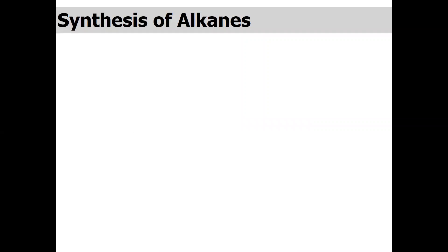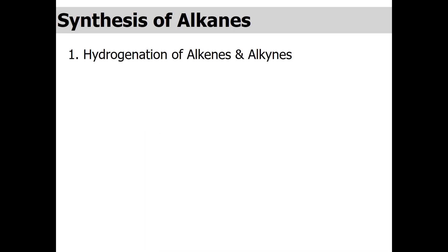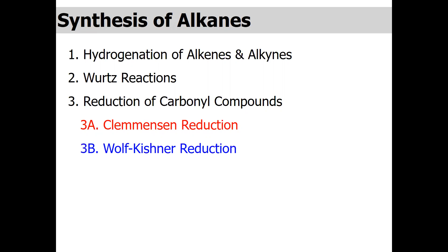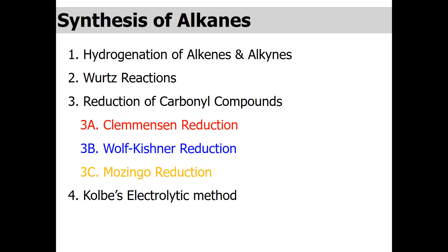The highlights of today's lecture: we will discuss hydrogenation of alkenes and alkynes, and the Wurtz reaction by which we can synthesize alkane. For reduction of carbonyl compounds, we will discuss three different ways: the first is Clemmensen reduction, the second is Wolff-Kishner reduction, and third is the Mozingo reduction. Our fourth reaction is the electrolytic method, also known as the Kolbe electrolytic method. Lastly, we will discuss how reduction of alkyl halide can also synthesize alkane.